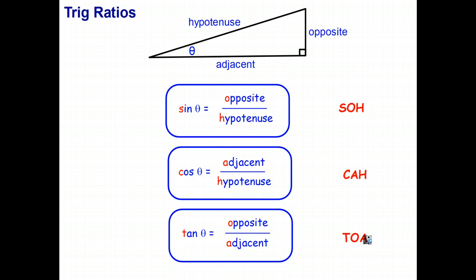So one thing you must, must, must know when you're studying trigonometry are these three ratios of the sides of a right-angled triangle. Sine is opposite over hypotenuse. Cosine is adjacent over hypotenuse. Tangent is opposite over adjacent.